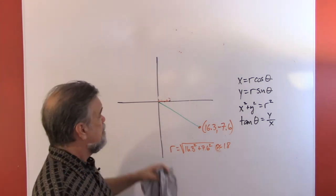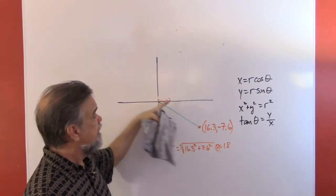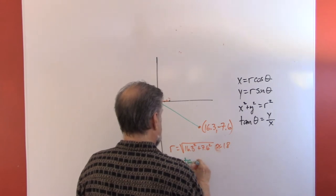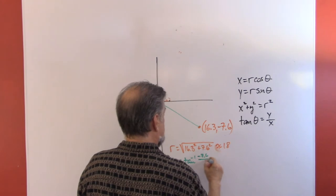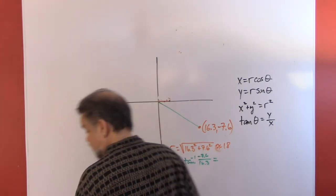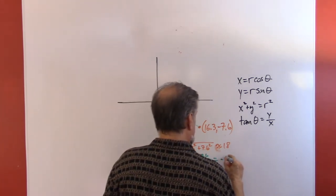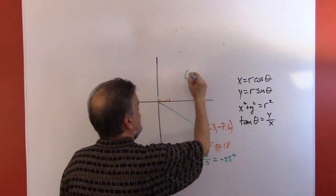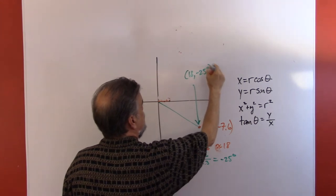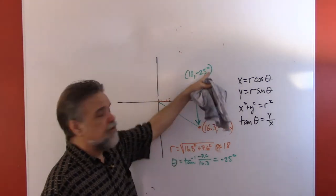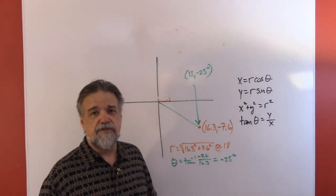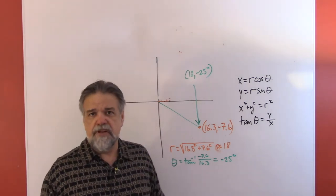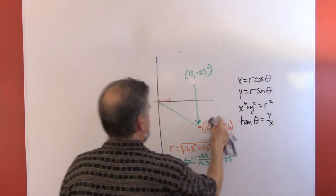To find theta: since the point is just below the x-axis, theta will be a negative angle. Theta is the inverse tangent of -7.6 over 16.3, which gives about -25 degrees. So my point is (18, -25°). Always include the degree symbol so you don't confuse degrees with radians — totally different angles. Not too hard! Let's do one that will be a little trickier.